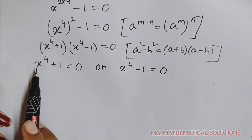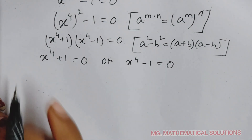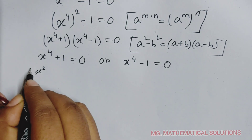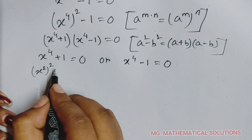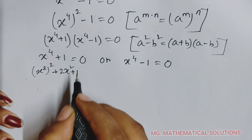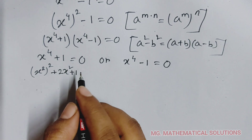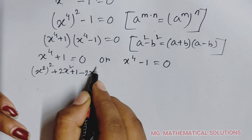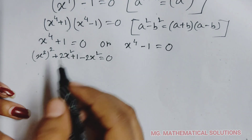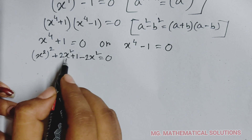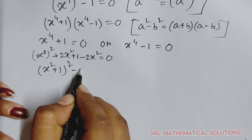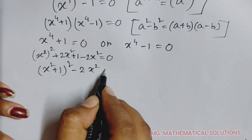First, we try to solve the polynomial x to the power 4 plus 1 equal to 0. We can write x to the power 4 as x squared whole to the power 2. We add plus 2x squared plus 1, giving a plus b whole square form, then subtract 2x squared equal to 0. So x squared plus 1 whole squared minus 2x squared equal to 0.